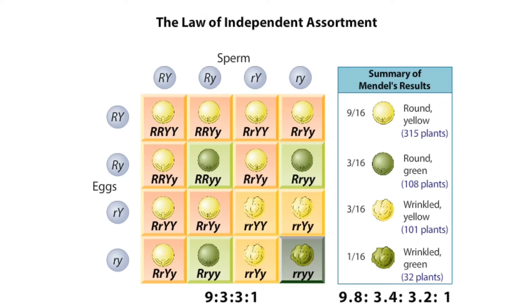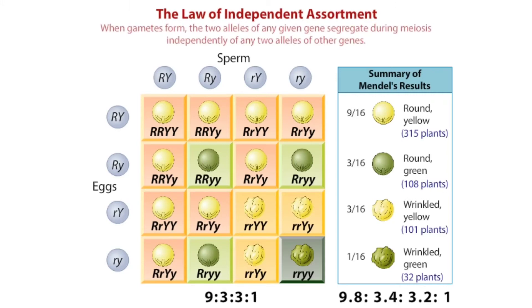Mendel made similar crosses for various combinations of the 7 traits he studied. His results led him to propose the Law of Independent Assortment, which states that when gametes form, the two alleles of any given gene segregate during meiosis independently of any two alleles of the other genes.